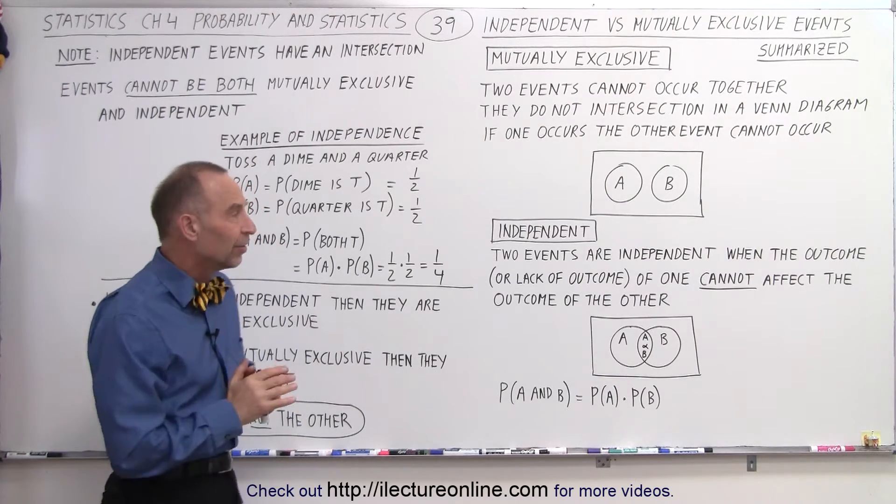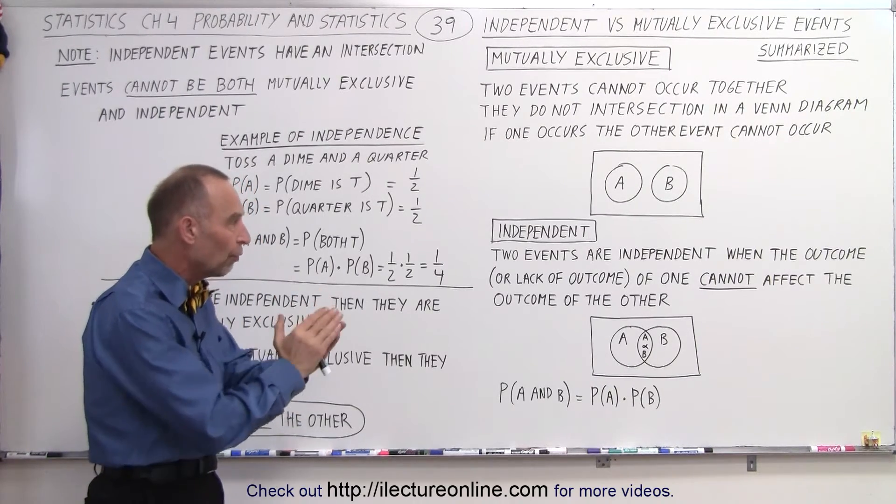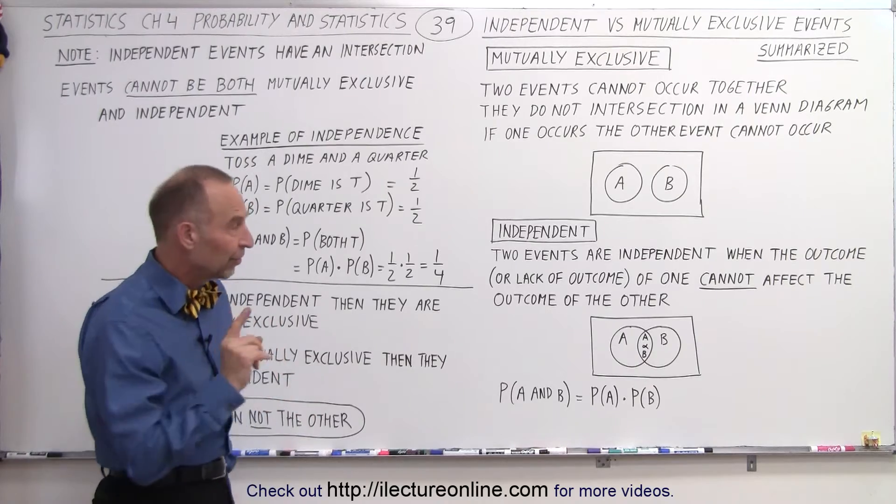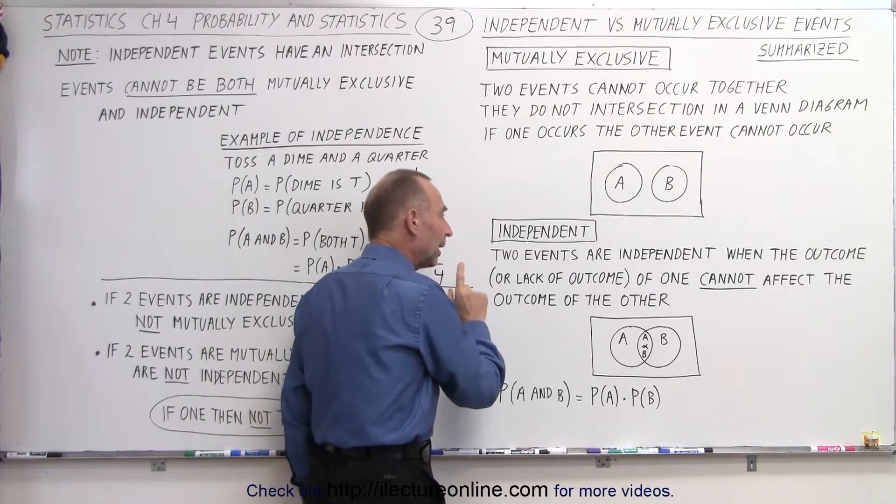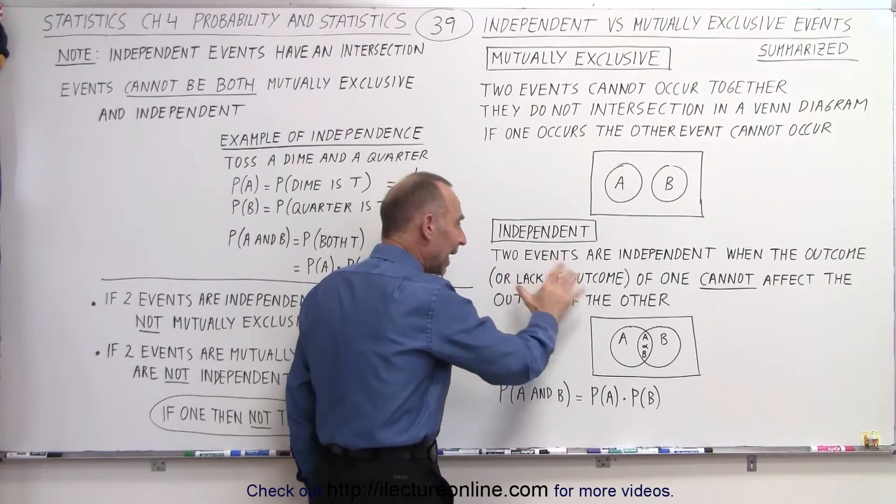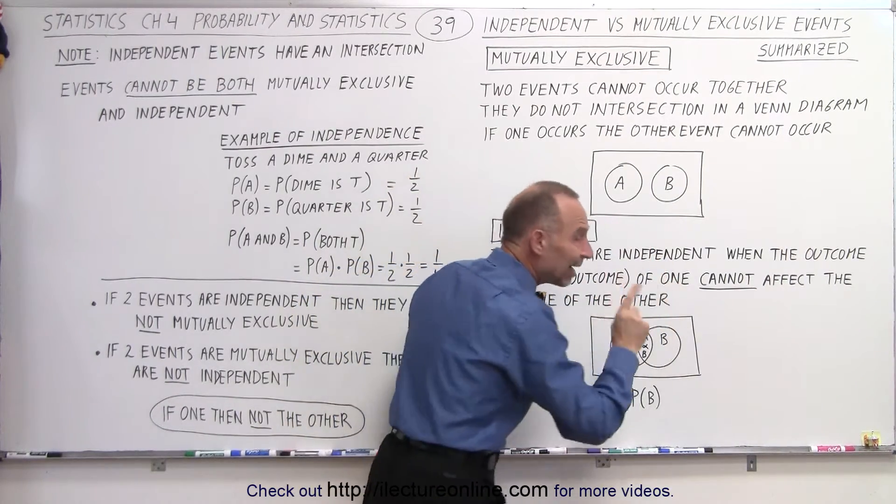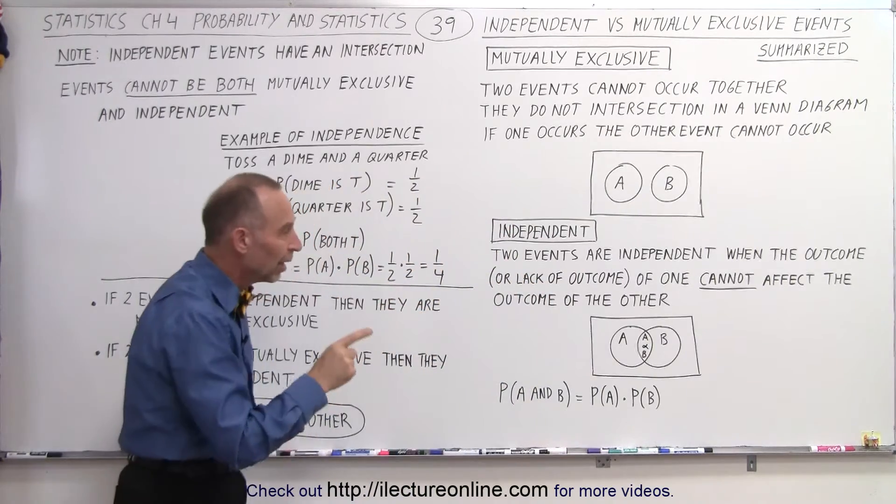For independent events, it's all different. There is overlap, but the difference there is that if two events are independent, they are independent when the outcome or the lack of outcome of one cannot affect the outcome of the other.